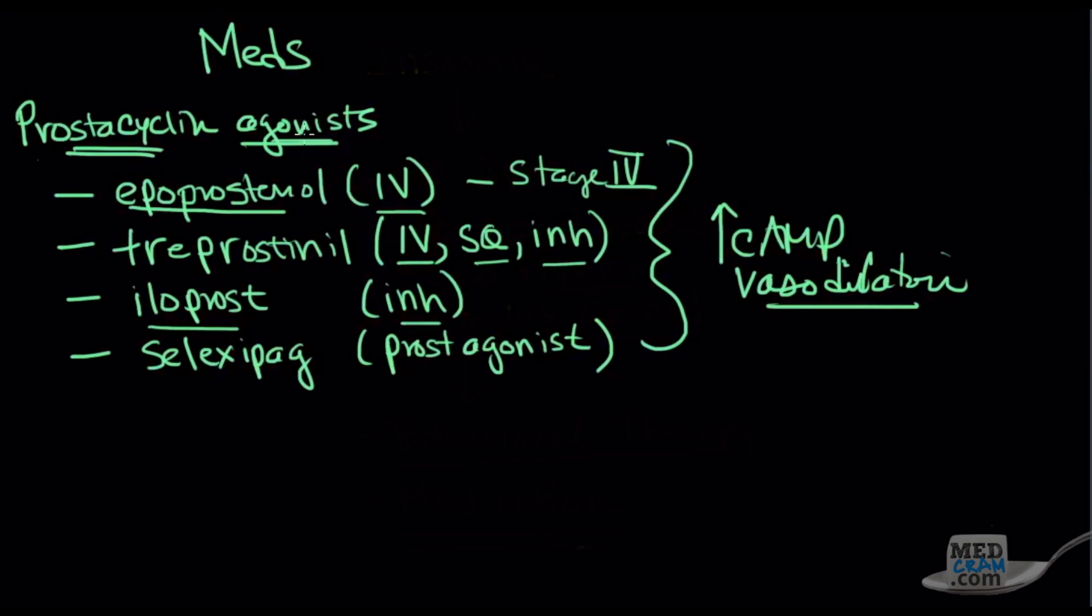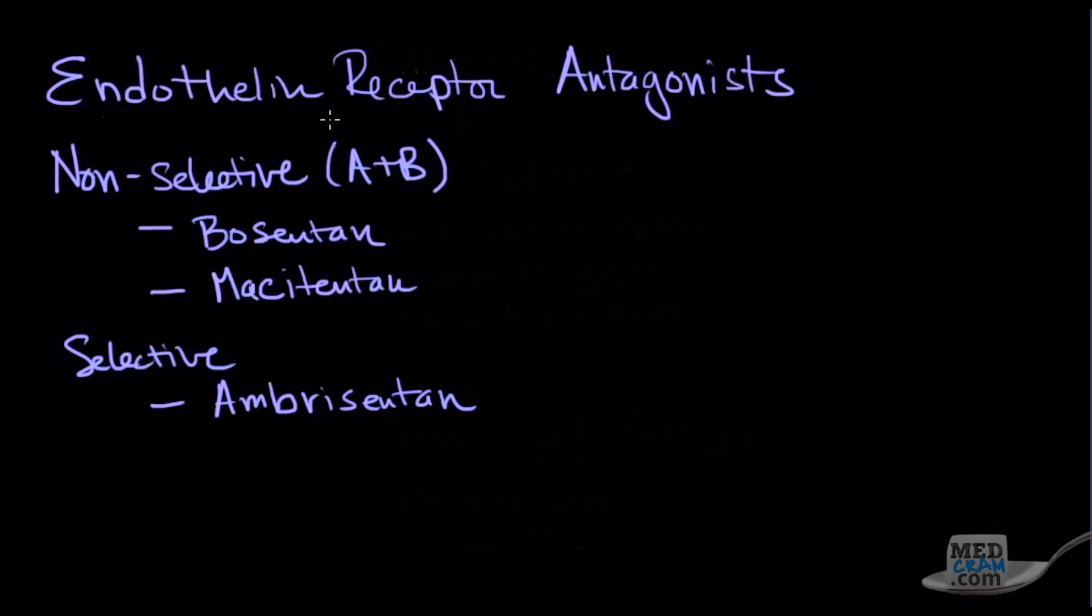The next group are the endothelin receptor antagonists. So endothelin-1 is a hormone that basically circulates around and is an extremely potent vasoconstrictor. So if we could possibly block these receptors, potentially we could get some vasodilation. That's exactly what we see. There are two types of receptors, the A and B. And so bosentan and macitentan are drugs that block these receptors. They're non-selective and seem to reduce the PA pressures. They also improve the quality of life, extend the length of time before decompensation, and increase exercise capacity. One of the selective ones is ambrisentan.